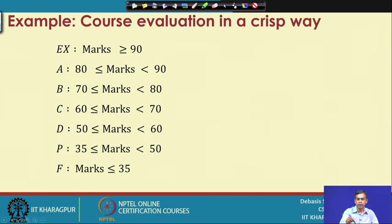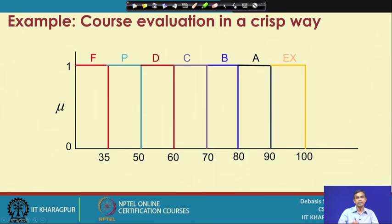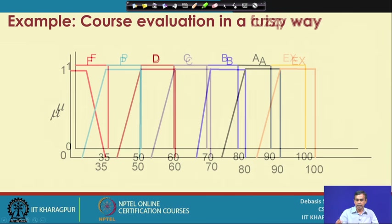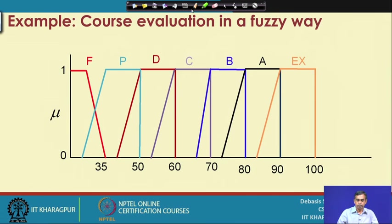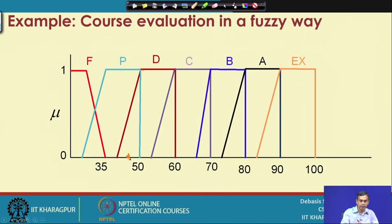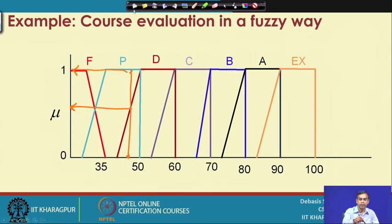The same thing in fuzzy formulation looks like this — this is the graphical display of the crisp formulation and this is the fuzzy formulation. In the fuzzy formulation, any marks — say, this particular value — basically denotes the D grade and also denotes the P grade. So this mark belongs to both the P grade and the D grade. If we draw this on the graph: if it is D grade, this is the membership value, and if it is P grade, this is the membership value. The same marks belongs to the two sets P or D with different membership values.